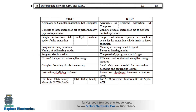In CISC, the number of instructions is more, so program size is reduced. No need for a specialized compiler design in CISC, but an efficient and optimized compiler design is required in RISC. A complex decoding circuit is necessary in CISC, while only a small chip area is needed for instruction decoding in RISC. Instruction pipelining is absent in CISC, and in RISC, instruction pipelining increases the execution speed.